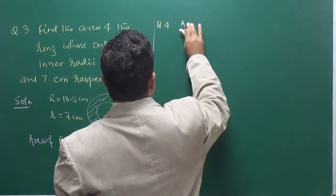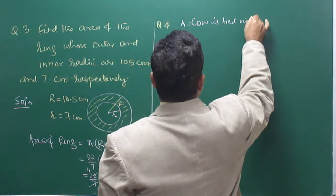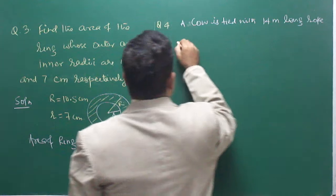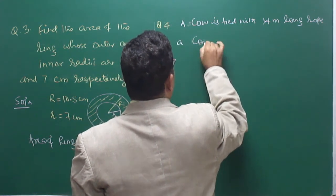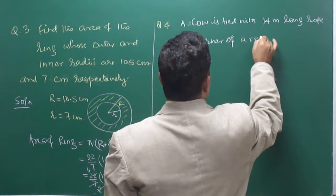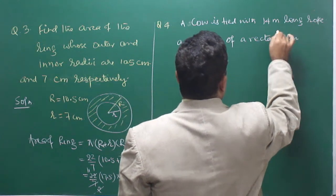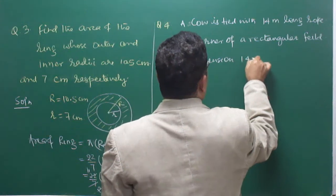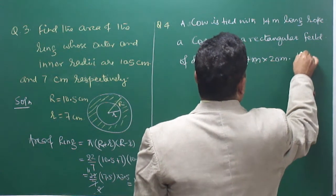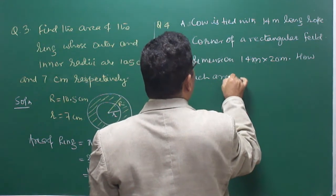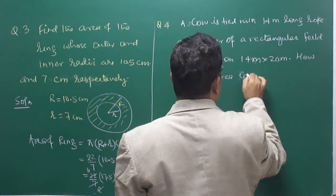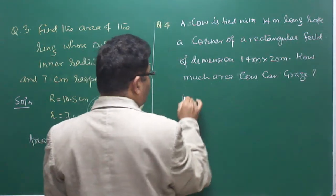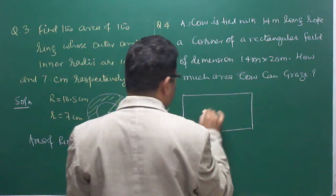Question 4: A cow is tied with a 14-meter long rope at a corner of a rectangular field of dimensions 14 m × 20 m. How much area can the cow graze? The cow is at the corner of this rectangle. The rope is 14 meters long, and the cow can turn and graze in a quarter-circle arc. So we have to find the area of a quadrant.